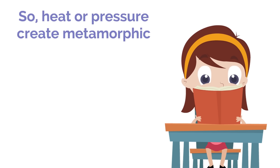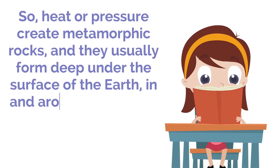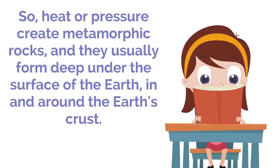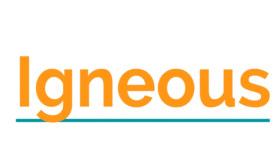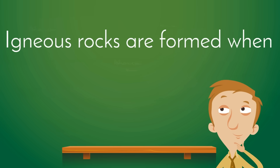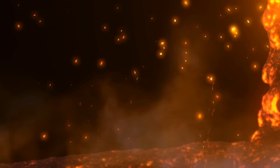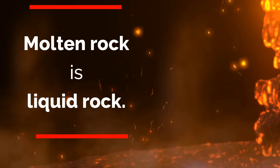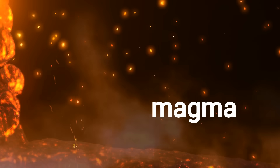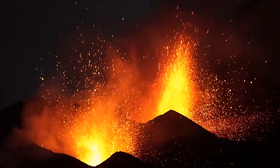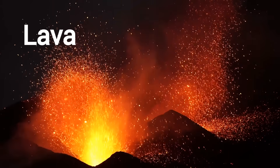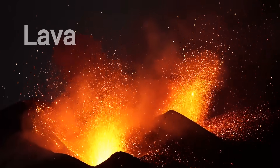Heat or pressure create metamorphic rocks, and they usually form deep under the surface of the Earth in and around the Earth's crust. Now we've come to our final rock category: igneous. Igneous rocks are formed when molten rock cools and hardens. Molten rock is liquid rock, and there are two forms of it. Inside of the Earth, molten rock is called magma. But when it comes out from inside the Earth, it is called lava. Lava is molten rock that is no longer inside of the Earth.